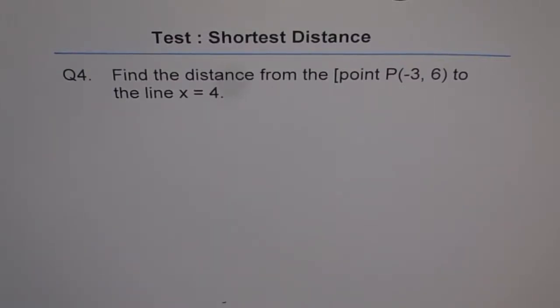Shortest distance. Question number 4. Find the distance from the point P(-3, 6) to the line x equals 4.